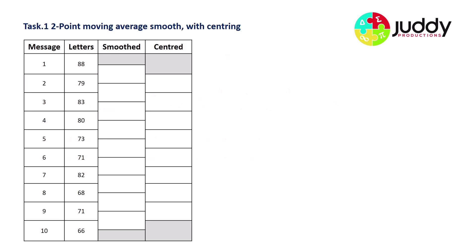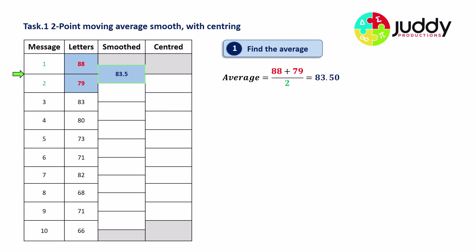Here's our table and our first task is a two-point moving average smooth with centering. The name gives away some detail — it involves two points, it's about an average or mean, and it has centering. Let's look at the two-step process: first, we complete the smoothed column.